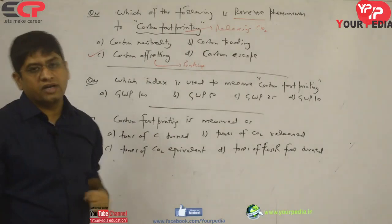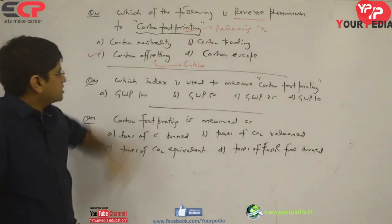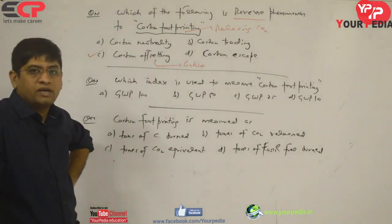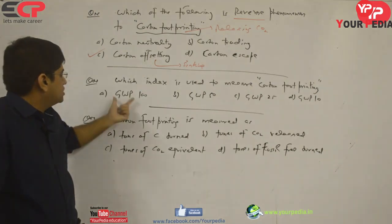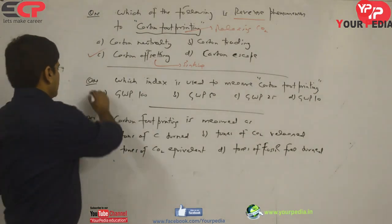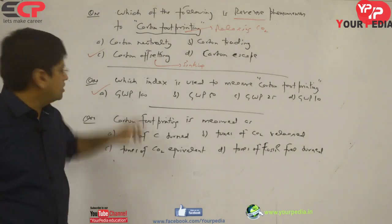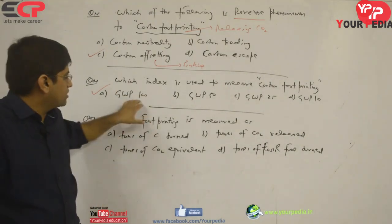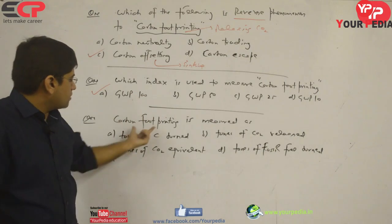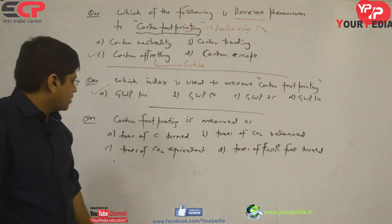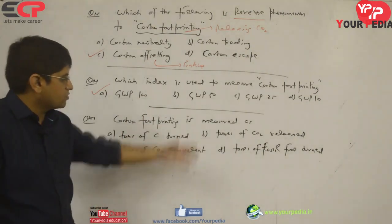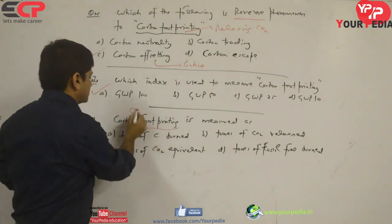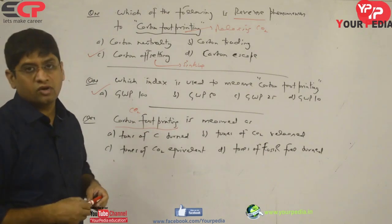Next question: which index is used to measure carbon footprinting? GWP — Global Warming Potential 100 — is used. You need to memorize this. Carbon footprinting is measured in tons of carbon dioxide. Remember that footprinting is related to carbon dioxide, not carbon, not fuel, but carbon dioxide.